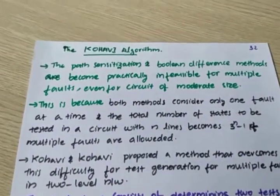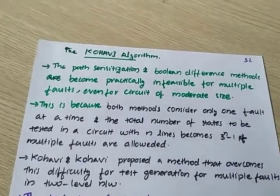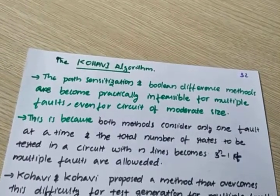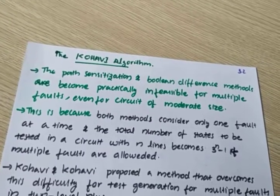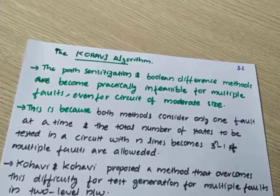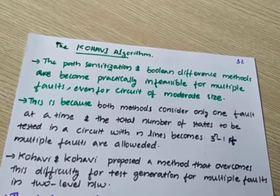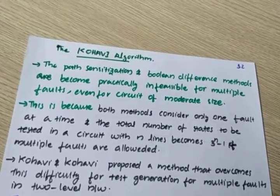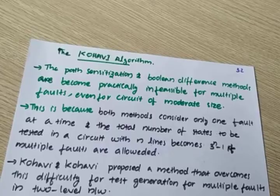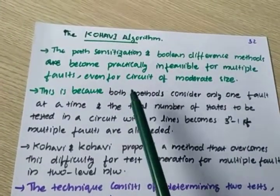Today's lecture will discuss Kohavi's algorithm, which is another method to find faults in digital circuits. The path sensitization and boolean difference methods become practically infeasible for multiple faults, even for a circuit of moderate size. In all the problems we taught, we normally consider only one fault at a time. If multiple faults need to be checked simultaneously, those methods will fail. To overcome this, we introduce Kohavi's algorithm.